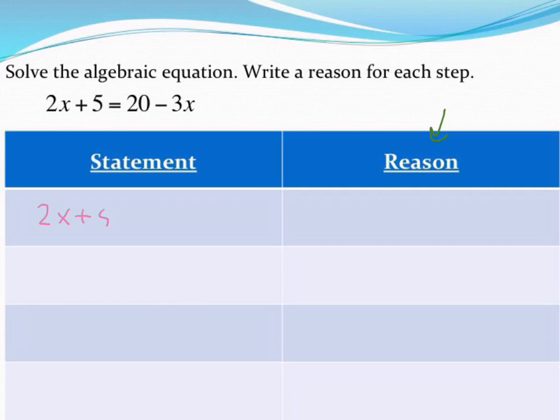So always start with your original statement. I'm going to say 2x plus 5 equals 20 minus 3x and the reason that I know that's true is I'm always going to say that that was given to me. The next thing I might do is add 3x to both sides to get 5x plus 5 equals 20. Because I used addition, I'm going to call my reason for this the addition property.